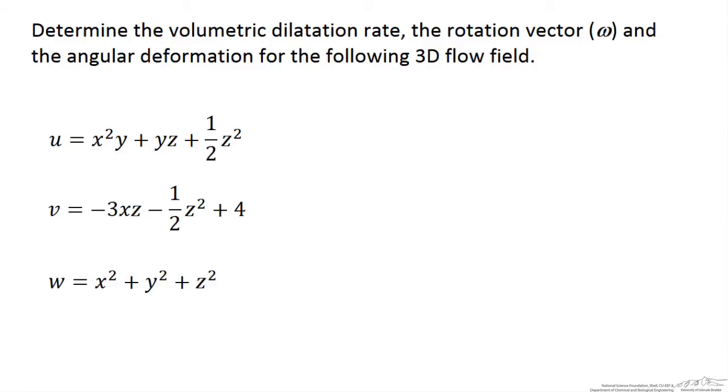In this screencast we will go through some fluid kinematics calculations to determine the following characteristics for a fluid flow field. We are going to determine the volumetric dilatation rate, the rotation vector, and the angular deformation for the following 3D flow field. You are given three different velocities in a Cartesian system: the velocity in the x direction, the velocity in the y direction, and the velocity in the z direction.